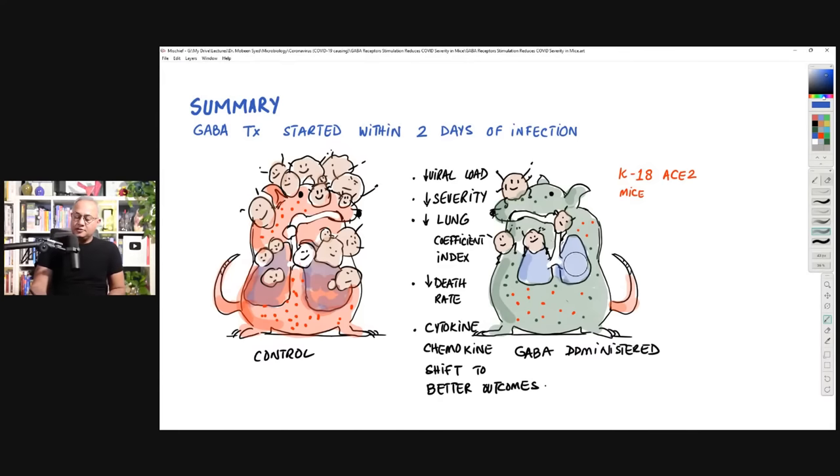So let me reach there soon. First of all, what was the result? Within, if you started GABA within the first two days of the infection with SARS-CoV-2, then here was the result. Within seven, eight days of infection, in the control group that was not getting GABA, virus load was high. Deaths were more. Inflammation was more. Severity was more.